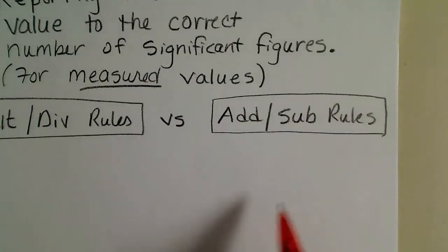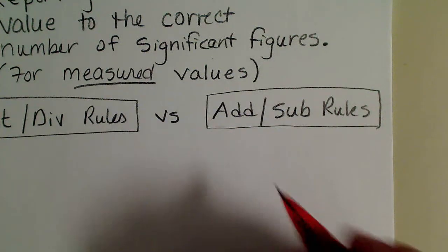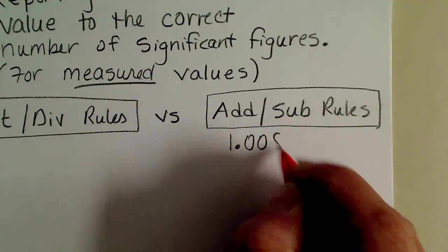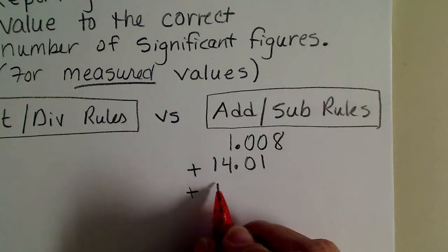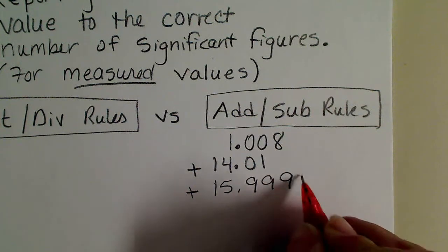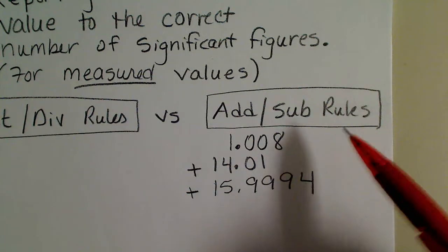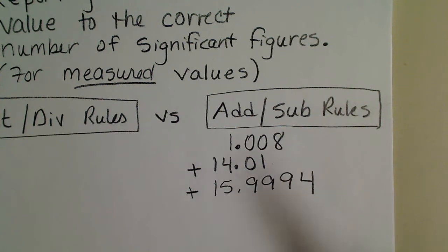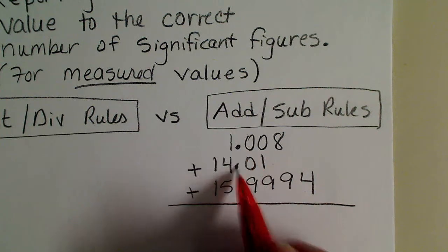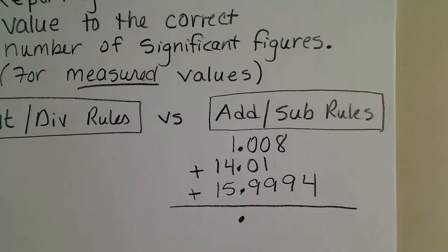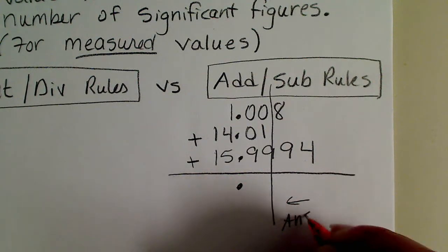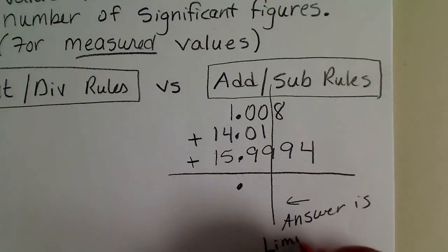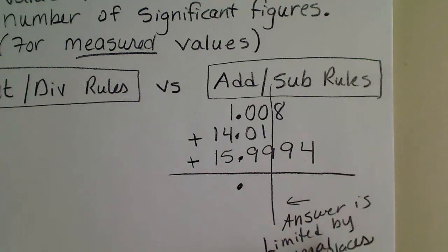I'm going to talk about the addition and subtraction rules first. For example, we're adding up three values: 1.008, adding that to 14.01, and then adding that to 15.9994. These are all masses of atoms — hydrogen, nitrogen, and oxygen. Just like we were taught in school, we line up the decimal, and our answer is going to be limited by decimal places.